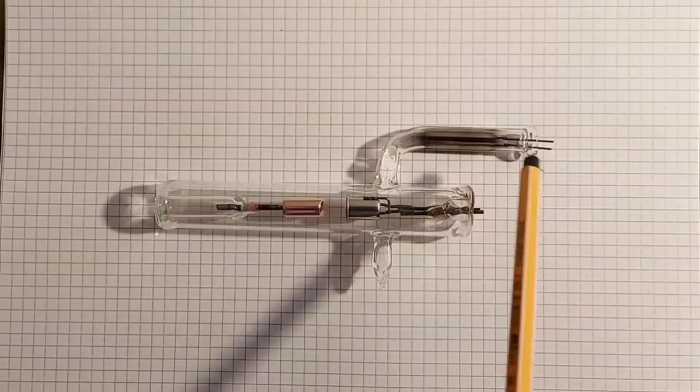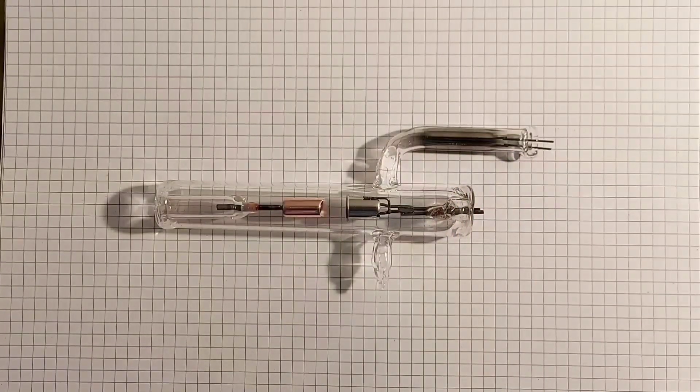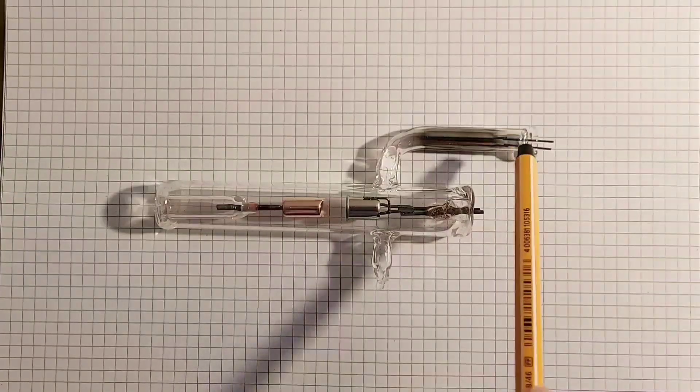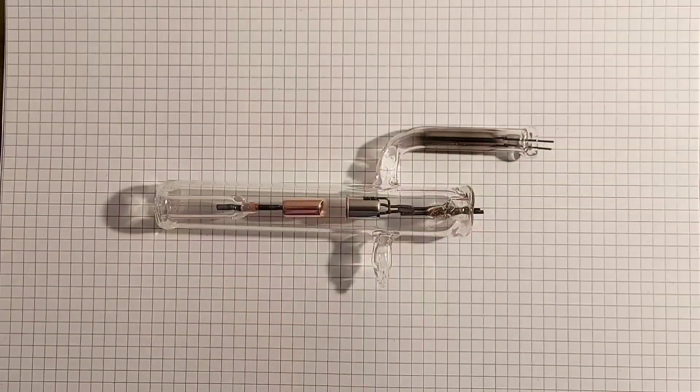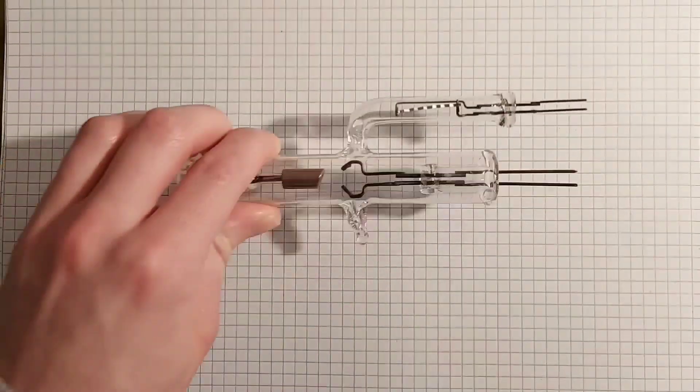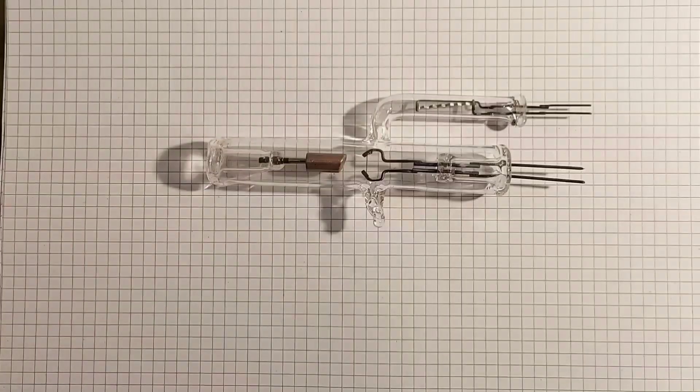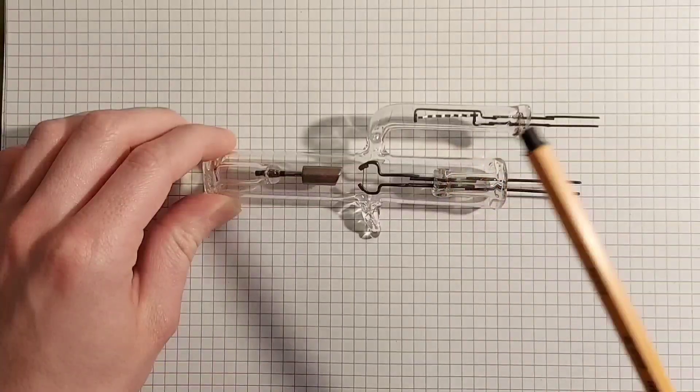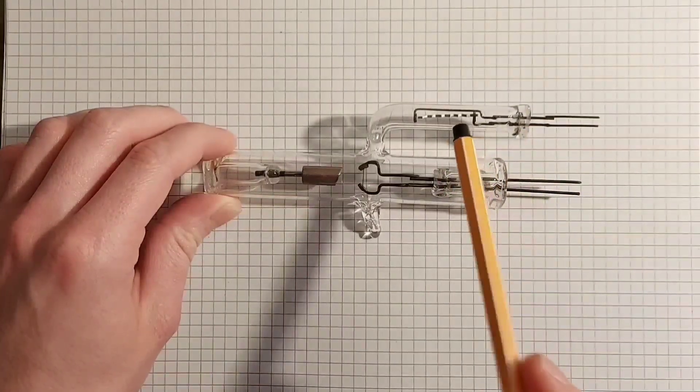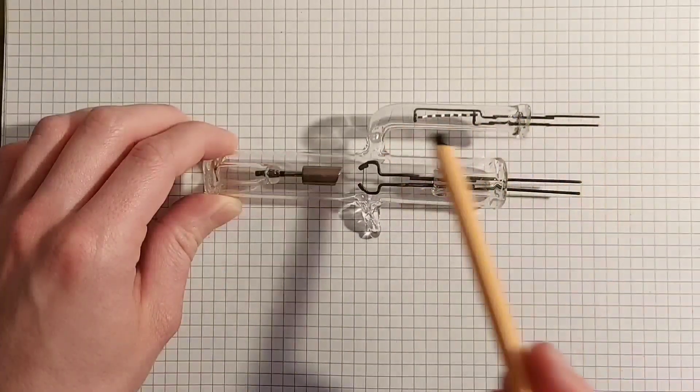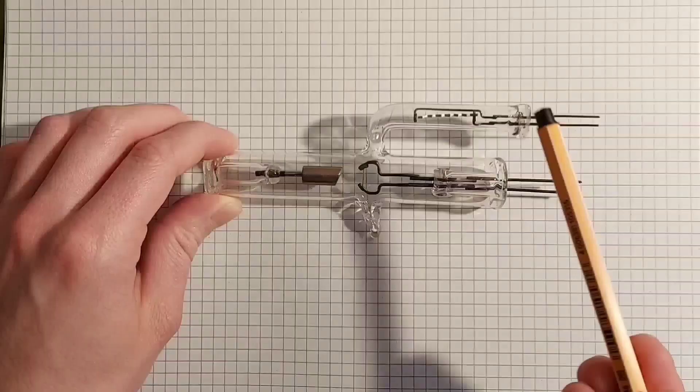One more thing is I already mentioned the getter and the getter is here. It's this shiny part and it's basically condensed titanium. So inside here is titanium wire. I'll show you this tube here. It's not evaporated yet. And here you can see it looks like a filament but the material is titanium.